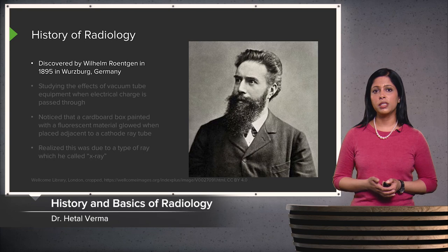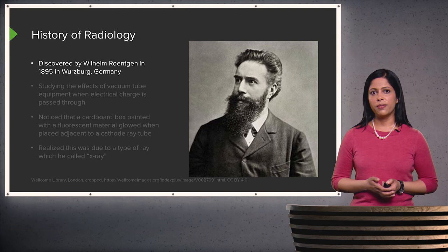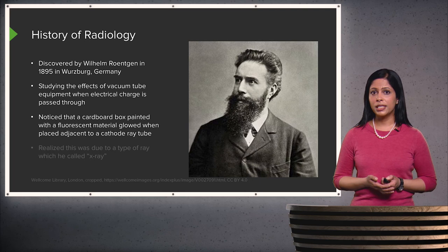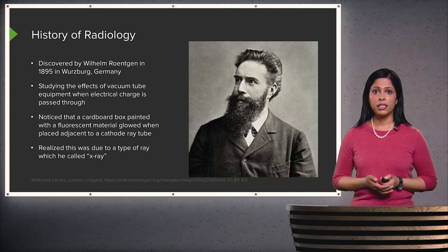Radiology was discovered by Wilhelm Röntgen in 1895 in Germany. He was studying the effects of a vacuum tube when an electrical charge is passed through it, and he noticed that a cardboard box painted with a fluorescent material glowed when placed adjacent to a cathode ray tube. He realized this was due to a type of ray, which he called an x-ray.